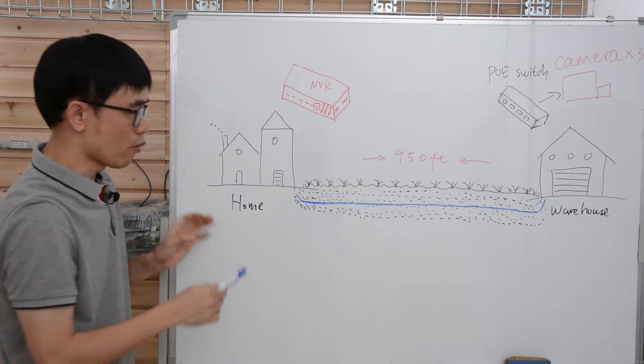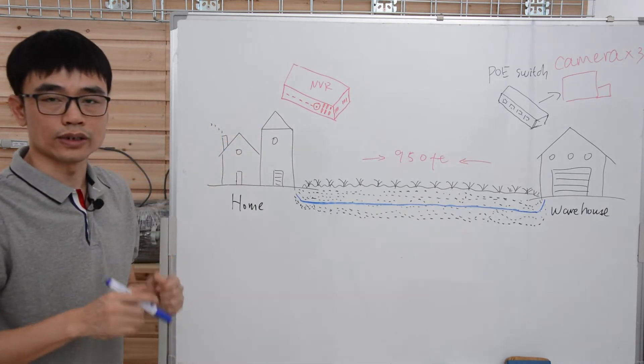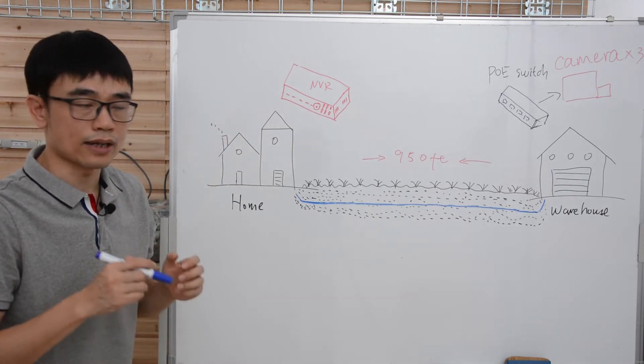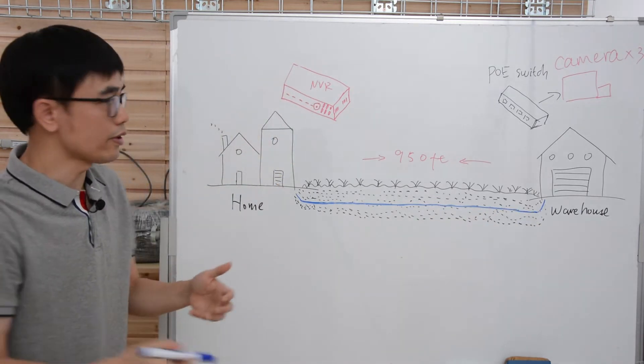The problem is there's about 1,000 feet between the home and the warehouse. The customer didn't know the TCP IP network is limited to about 300 feet before he buried the cable under the ground. So now he's not getting any video from the NVR.